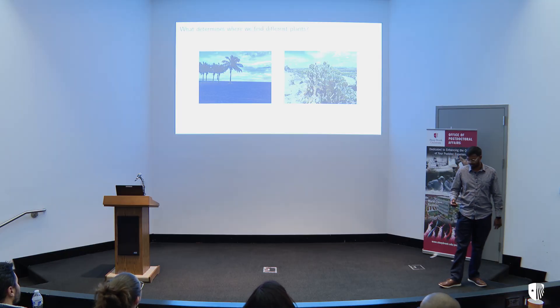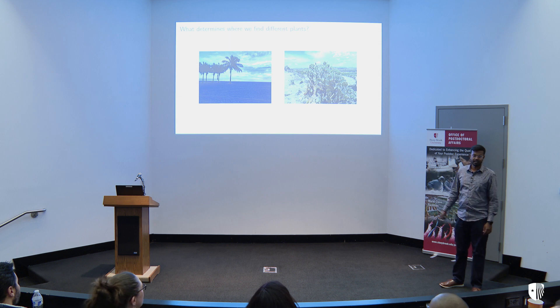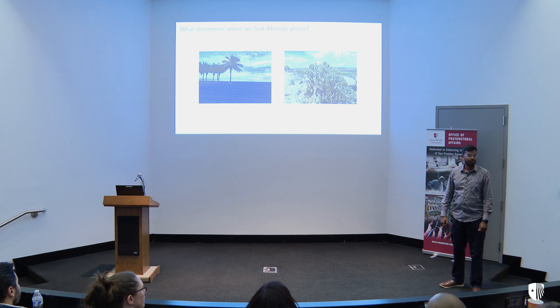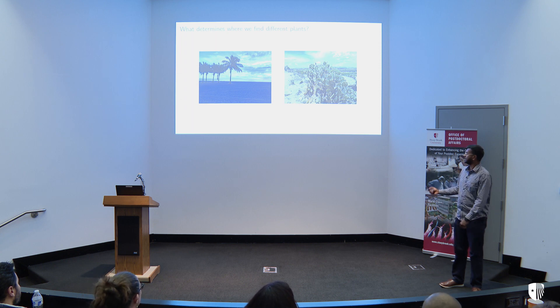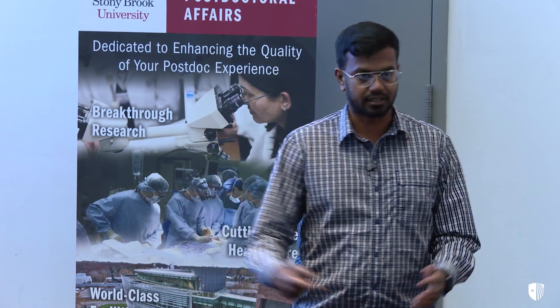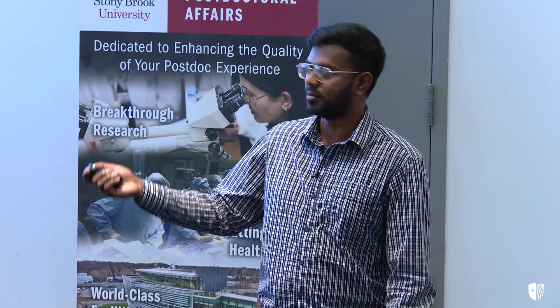This starts with a simple question. So many of you would have seen palm trees and cactus like this, but you don't see them everywhere. You don't see palm trees on mountain tops, and you only see cactus in deserts. The standard explanation for this is climate — you can't see palms on mountain tops because it's too cold, and you see cactus in the desert because it's hot and dry, and cactus are really good at hot and dry conditions.